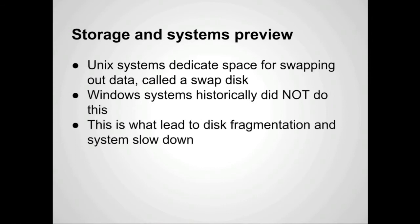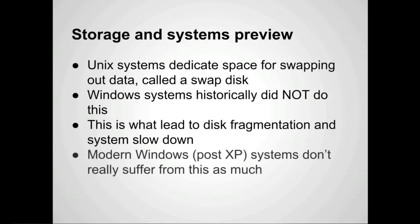Windows systems historically did not do this, which led to needing to defragment a disk, and after a while your system would start getting buggy and slow. Modern Windows systems — everything after XP — don't really suffer from this as much. The philosophical difference was that on a Unix system you had to dedicate a large amount of space for swap space, while on a Windows system you got to use more of your hard drive. Neither is really better than the other, but I lean toward the swap disk because it keeps things neater.